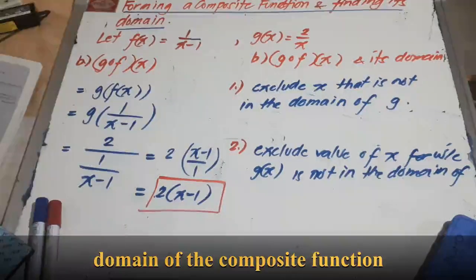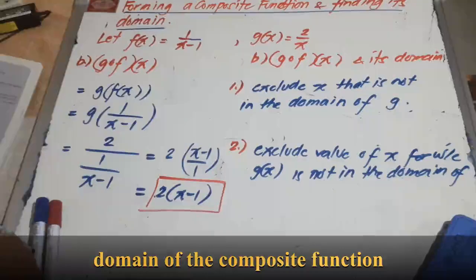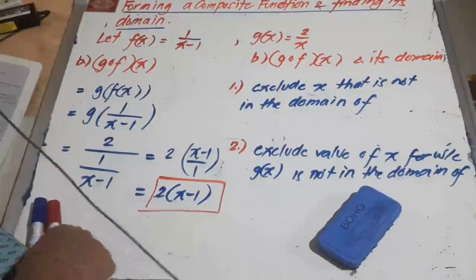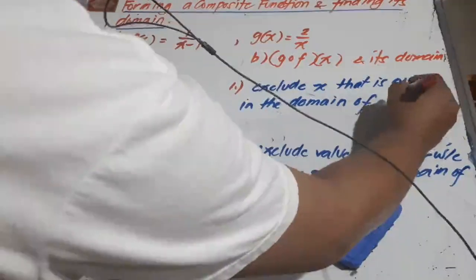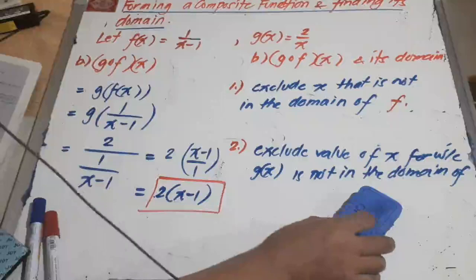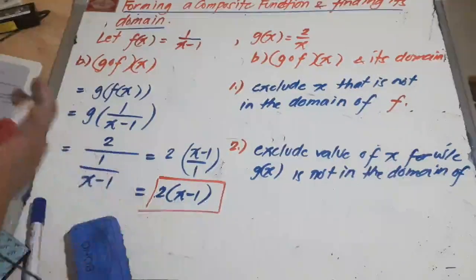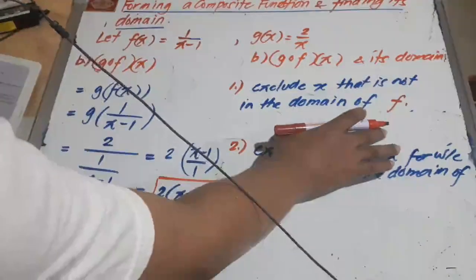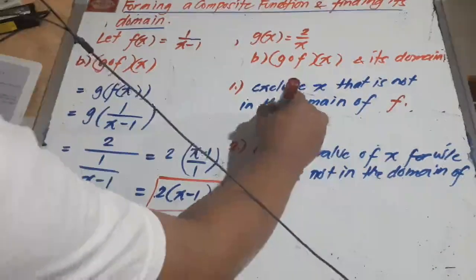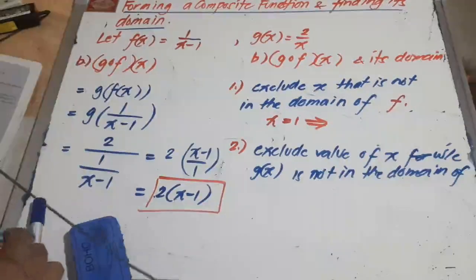Next, we determine the domain of this composite function g circle f of x. We follow the same steps as letter A, but this time we exclude x that is not in the domain of f. For f circle g we excluded from the domain of g; for g circle f we exclude from the domain of f. What is not in the domain of f? X equals 1. So we exclude x equals 1 from the domain of the composite function.